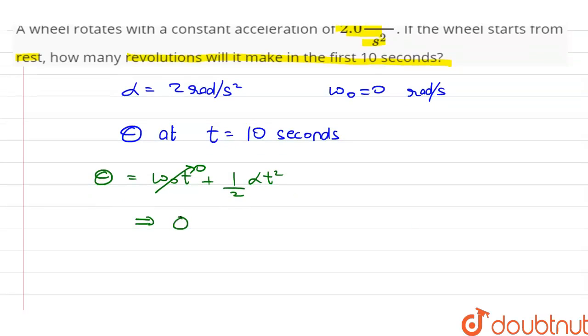This implies theta is equal to half into alpha was 2 and t is 10 seconds, so 10 squared. 2 cuts to.